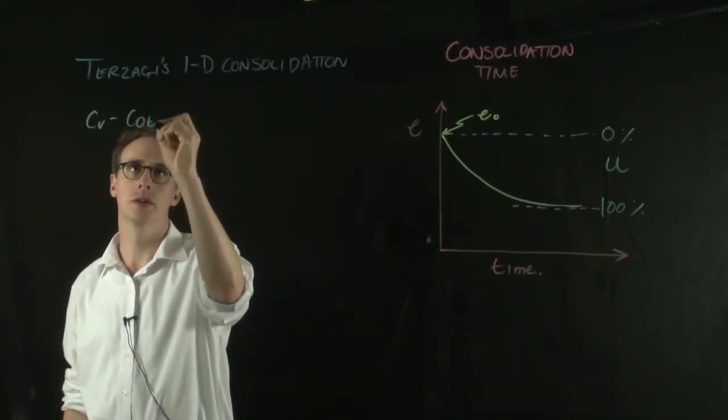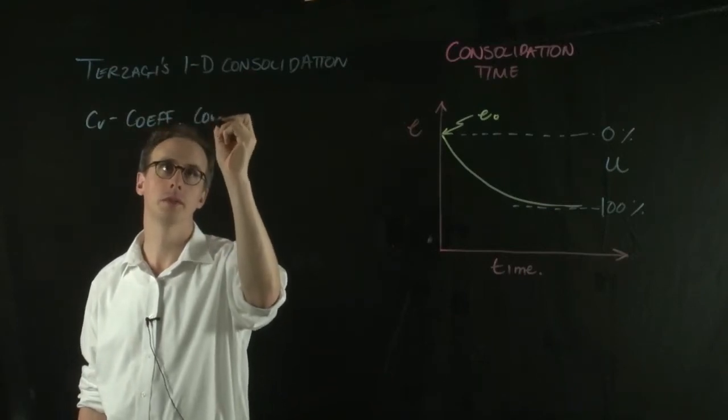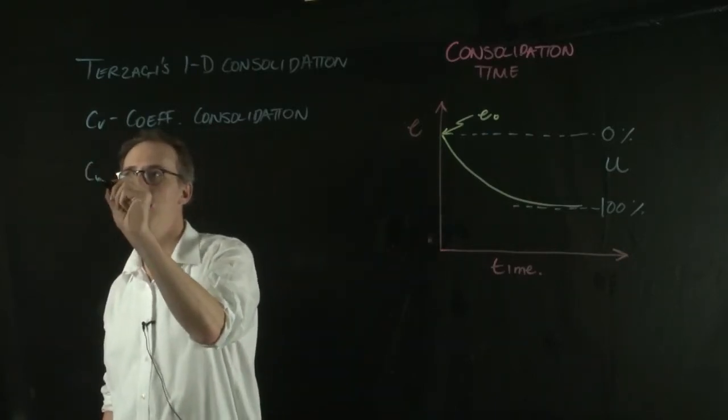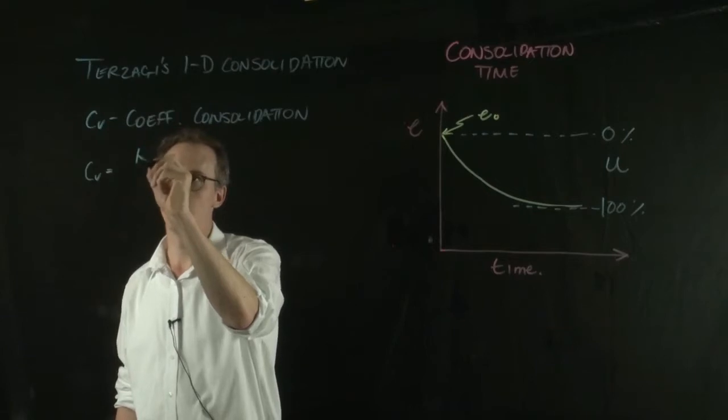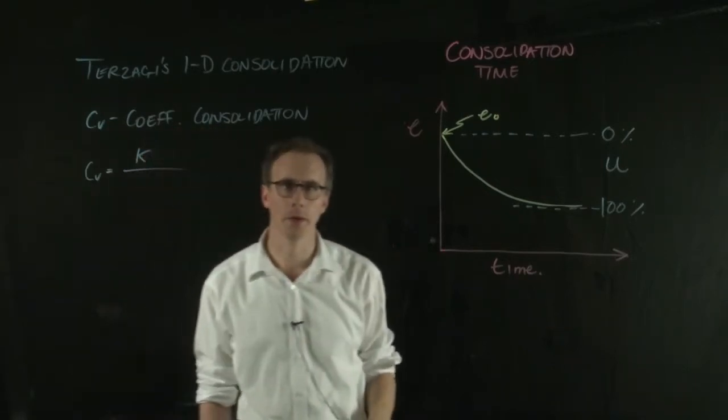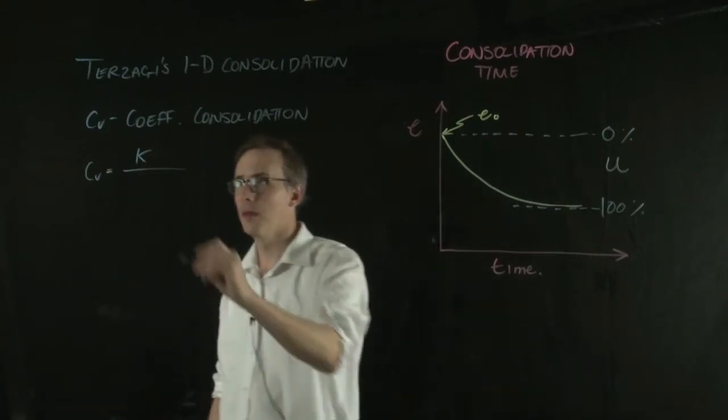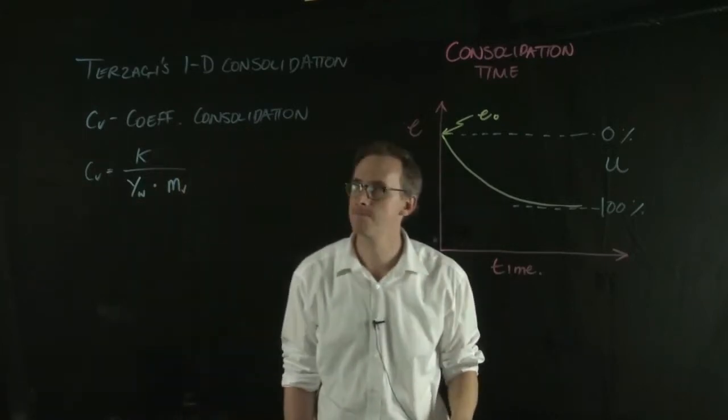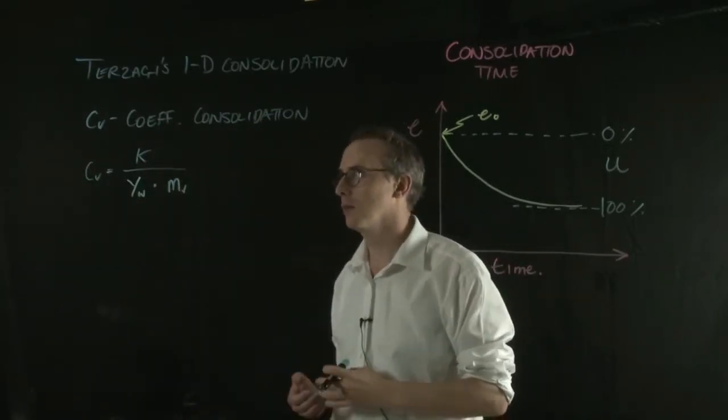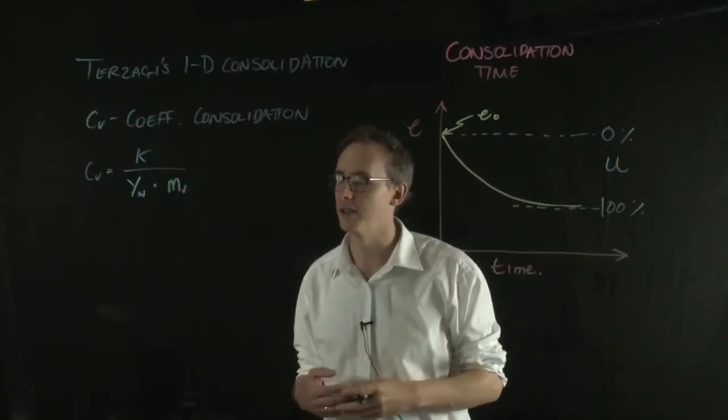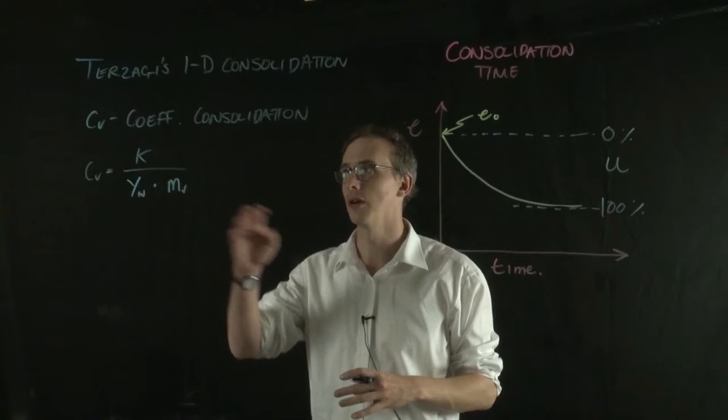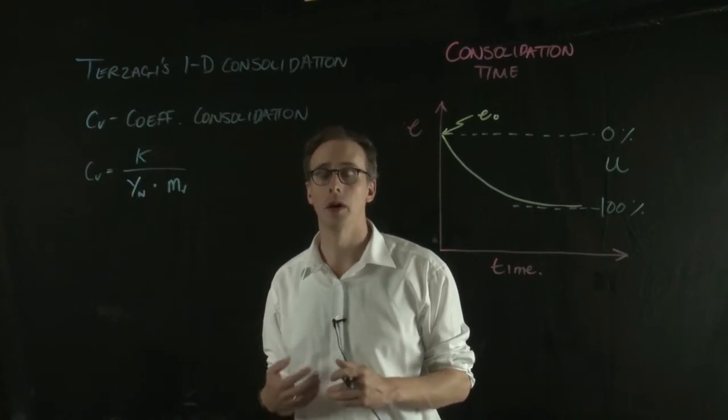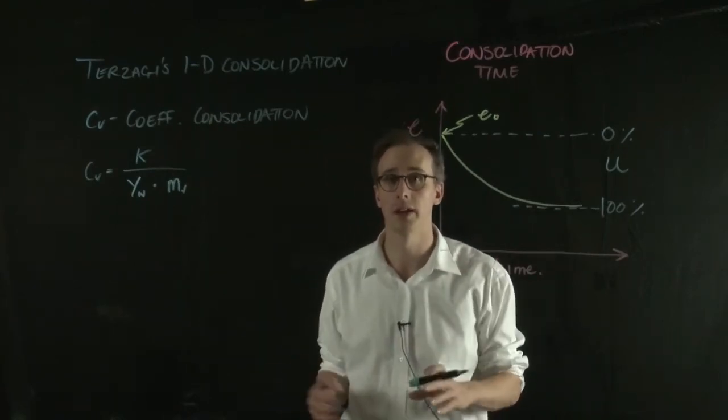Your CV is the coefficient of consolidation. Your CV value is a function of a number of different things, but as you can imagine, it's directly proportional to the permeability of the soil, the unit weight of water, and the coefficient of volume compressibility. The proof of this formula is a combination of Darcy's law and the conservation of mass. We can derive CV from an odometer test, and I'll go through that in a later video.